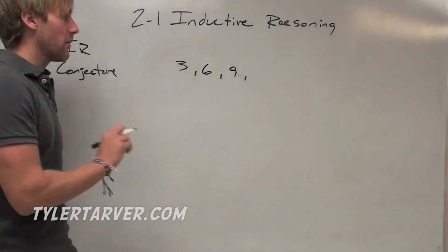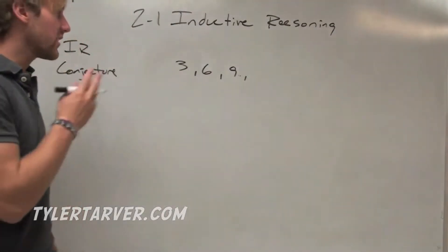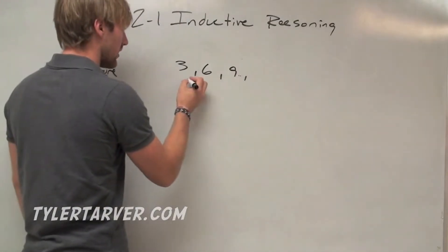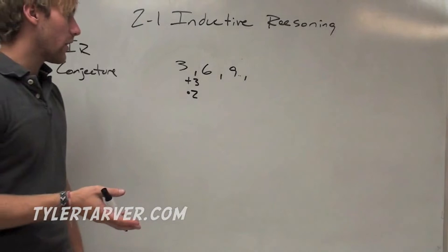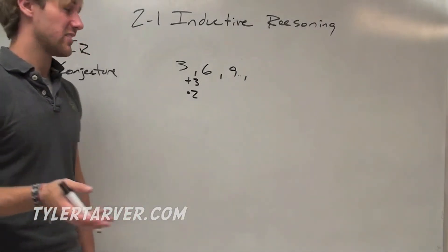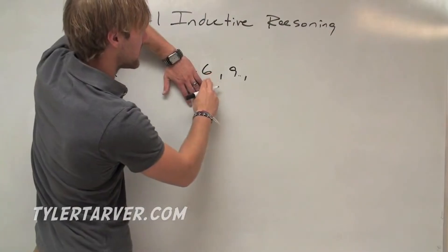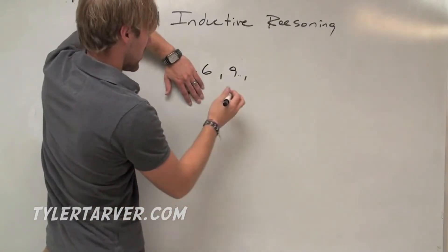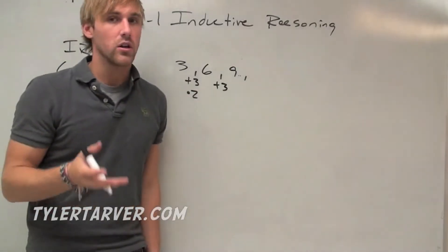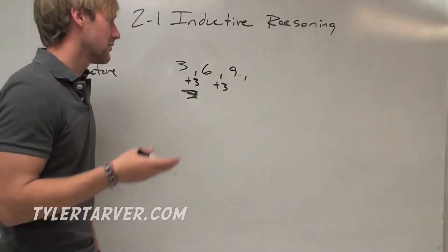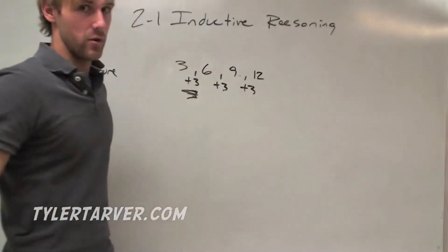The easiest way to do this: from 3 to 6, look at everything that can be done. We could add 3 to get 6, or we could multiply by 2. Now we check from 6 to 9. Out of those two options, adding 3 works because multiplying 6 times 2 gives 12, which is wrong. So the pattern is adding 3. If I add 3 to 9, the next number is 12.